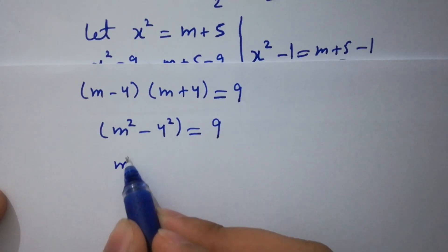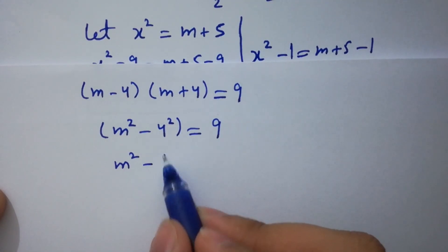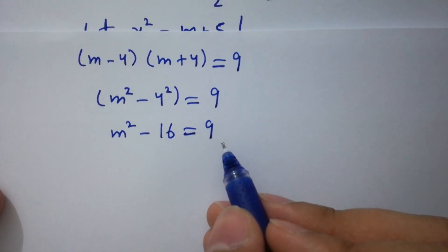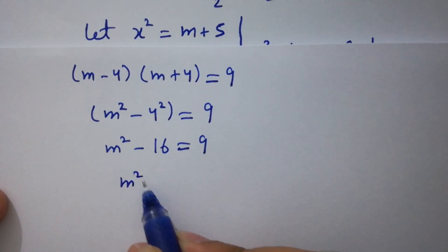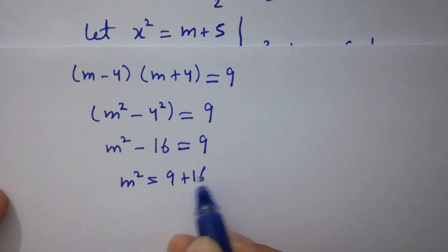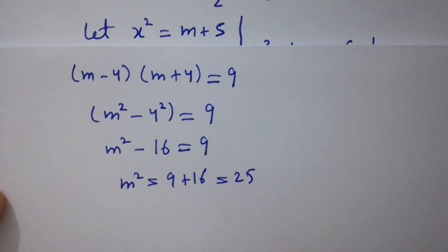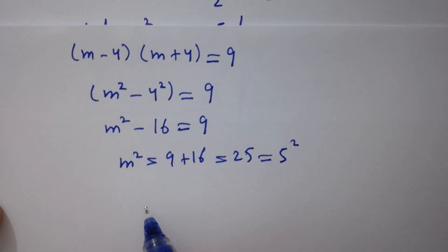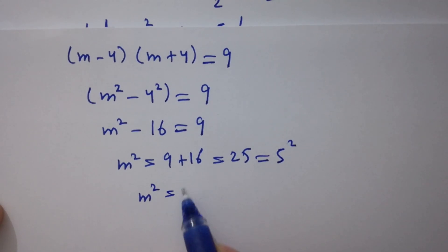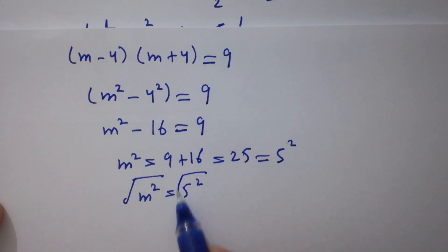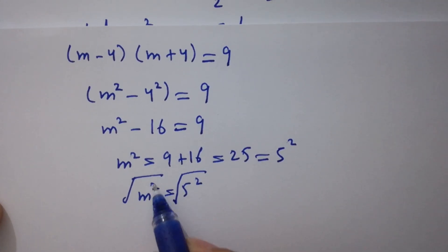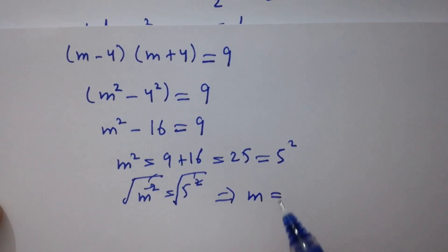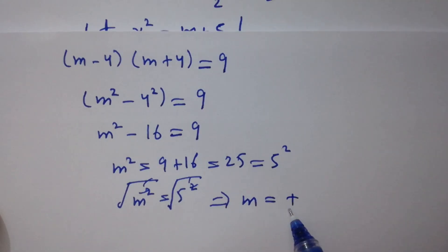This is a difference of squares: m²-4² = 9, so m²-16 = 9. We have m² = 9+16 = 25. Since 25 = 5², we have m² = 5². Taking square root on both sides, m = ±5.